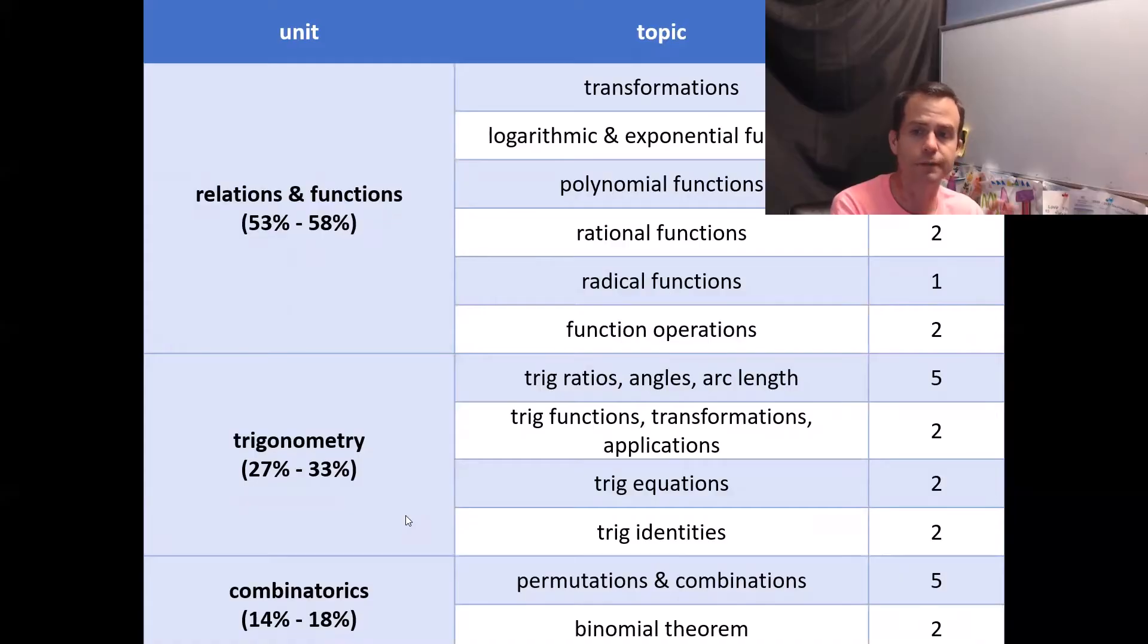There's about two questions for trig functions, transformations, applications, two questions on trig identities, and two questions on trig equations. And then the last section will be combinatorics, which is your binomial theorem and your permutations and combinations. And that will account for 15-16%.